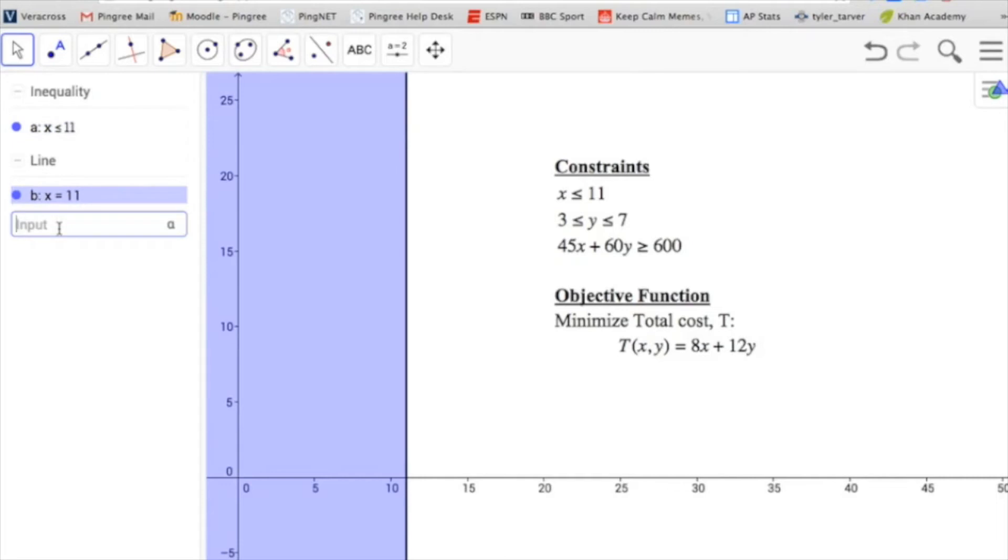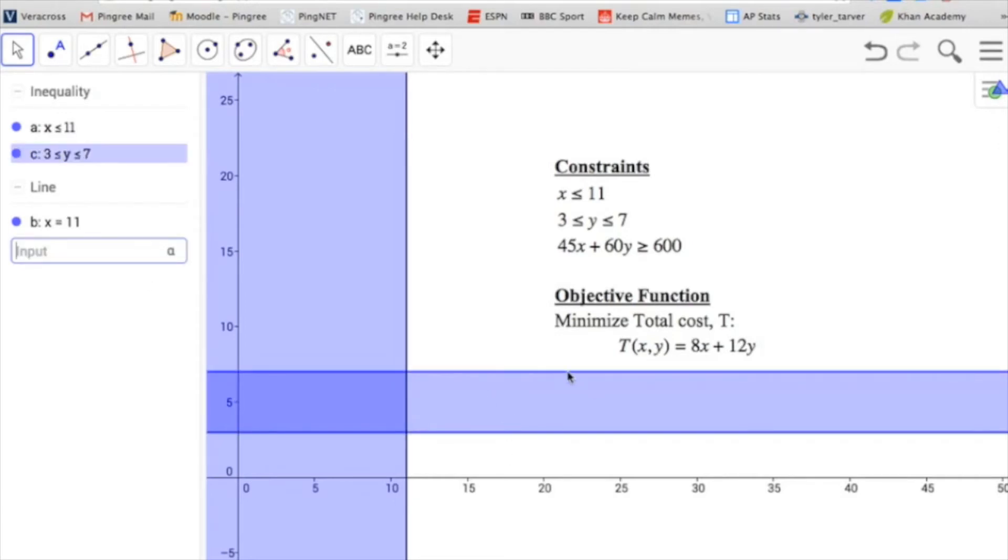Let's create the other one. Now I'm going to create the second inequality of my second constraint, which is 3 is less than or equal to y, which is less than or equal to 7. Now I've got this section right here. I'm going to start to see that there's some overlap here.